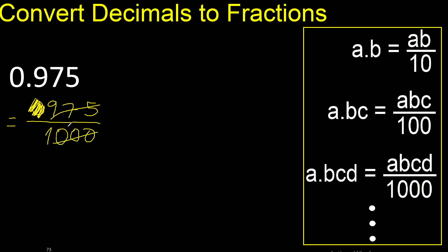Can be simplified because it can be divided by the same number. Divided by 5 — 200. Can be divided by 5 again. Divided by 5 — 39. Divided by 5 — 40.